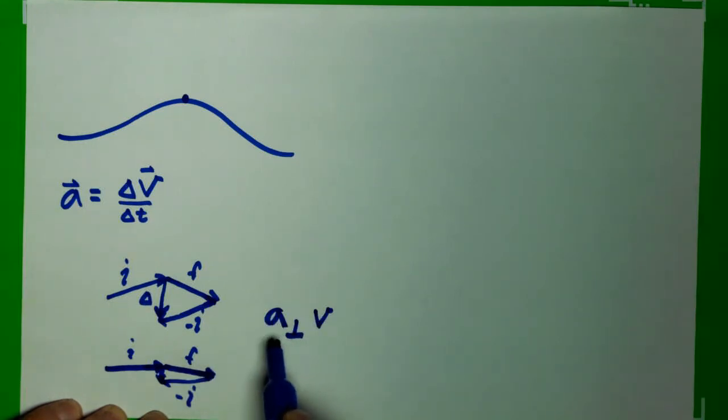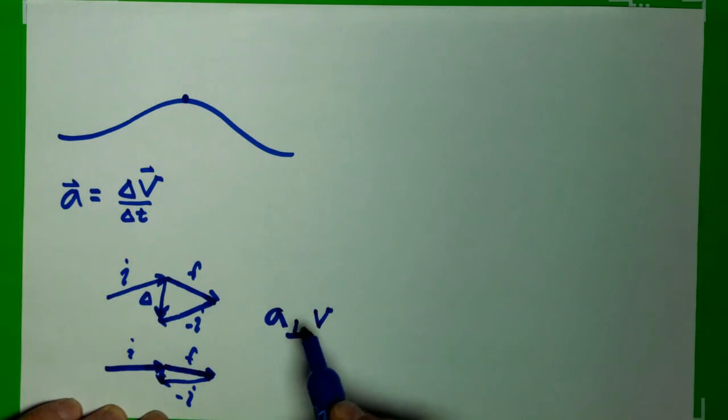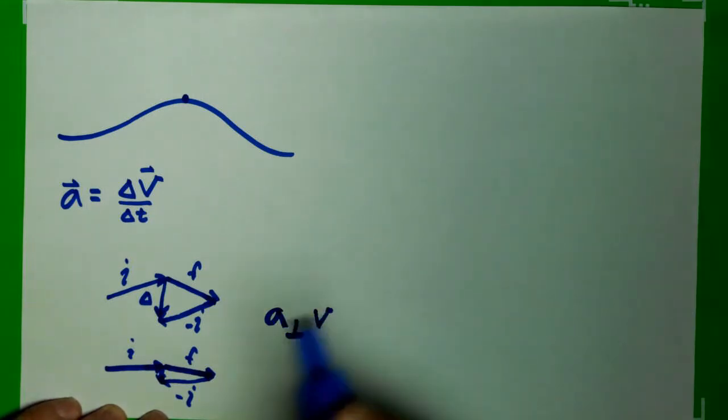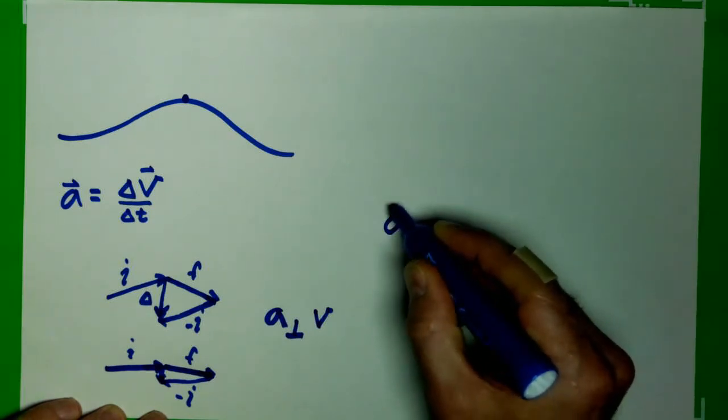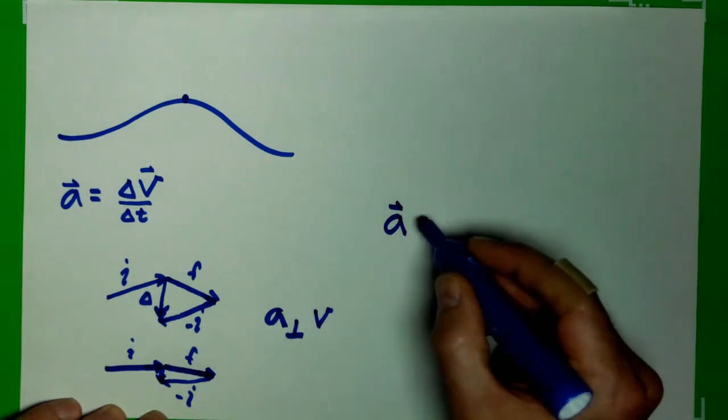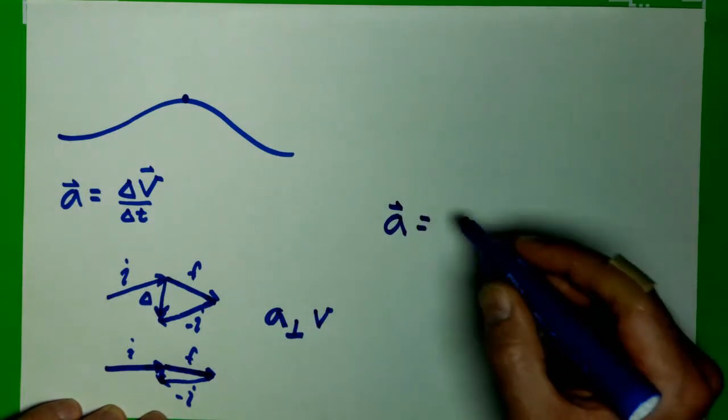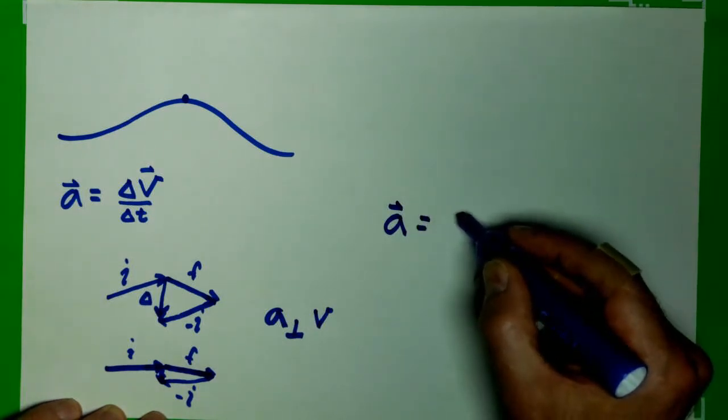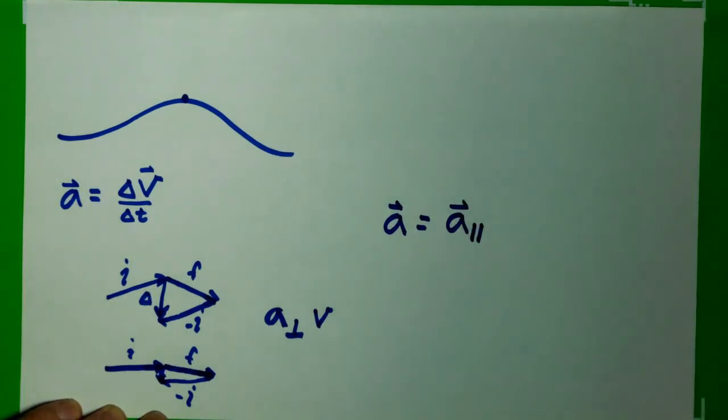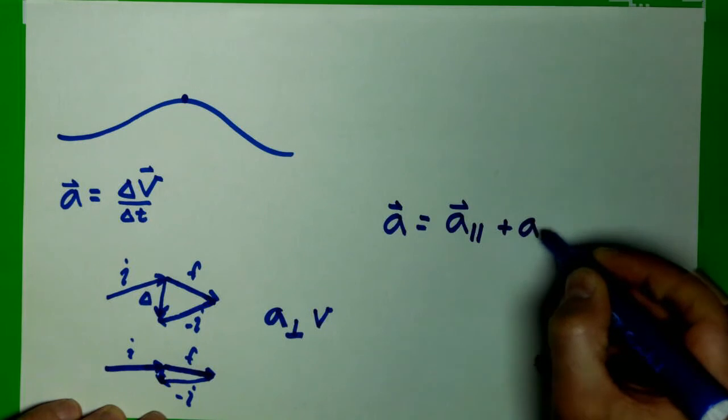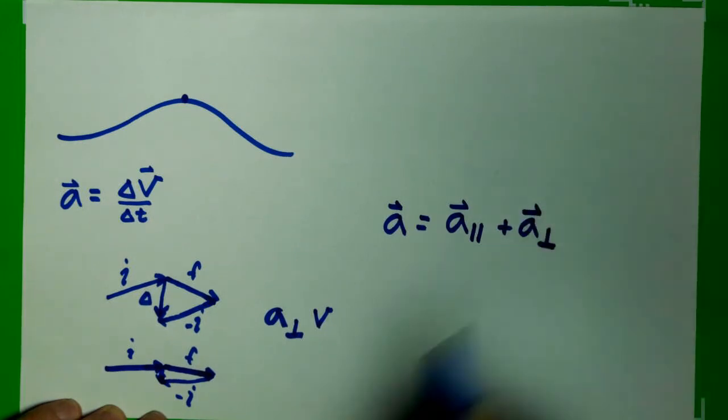And so, in the case of unchanging speed, the only acceleration we have is perpendicular. So we can take that idea with previous ideas and say that our full vector acceleration can be broken up into a part that is parallel to the motion and a part that is perpendicular to the motion.